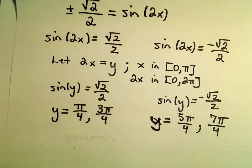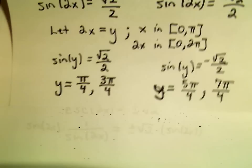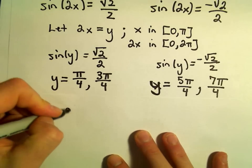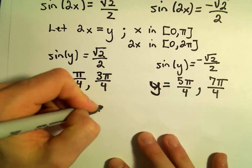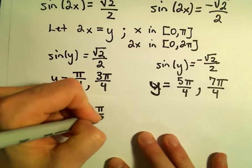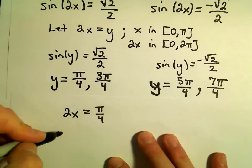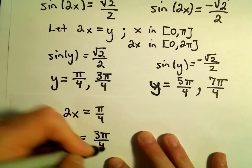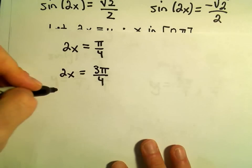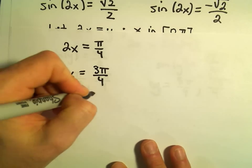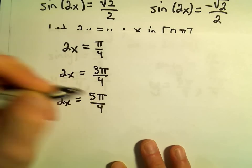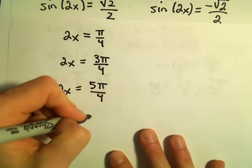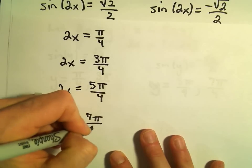Now we know what y equals, but we want to know about x. So we let 2x equal each value: 2x equals π over 4, 2x equals 3π over 4, 2x equals 5π over 4, or 2x equals 7π over 4.